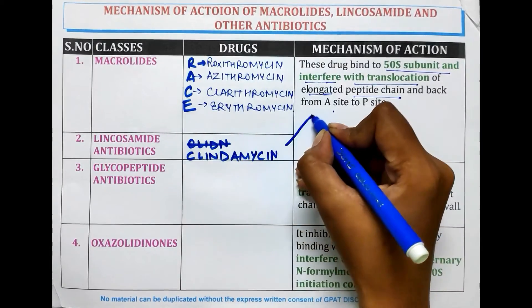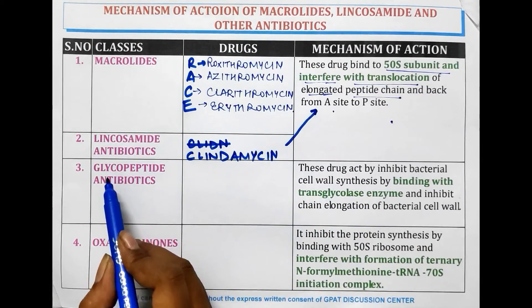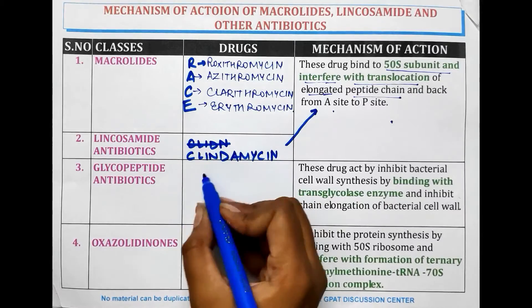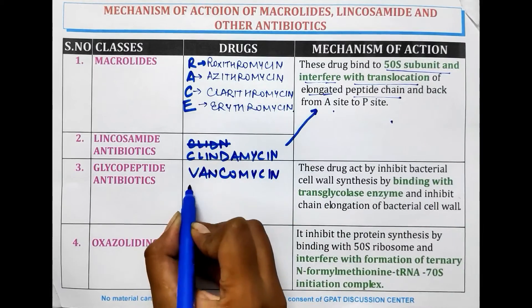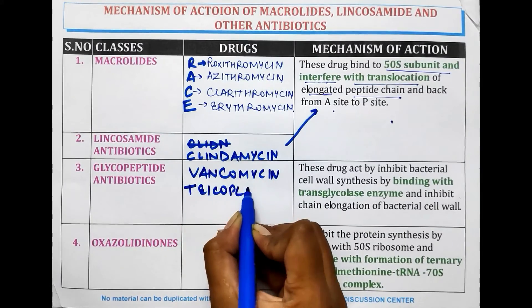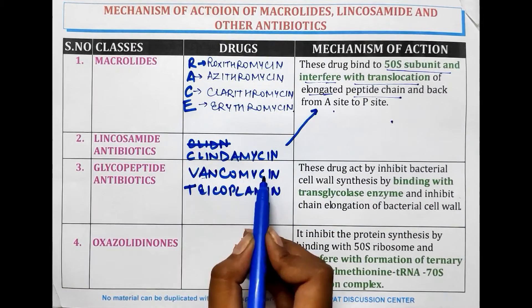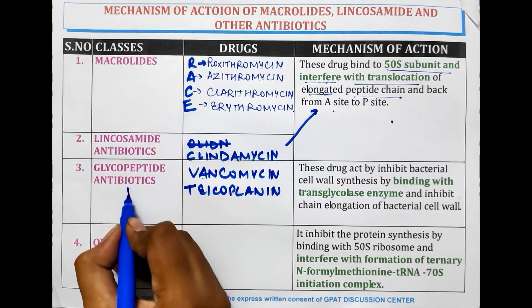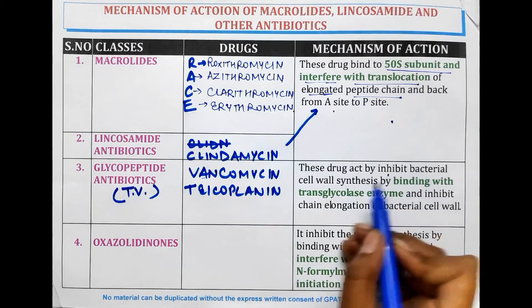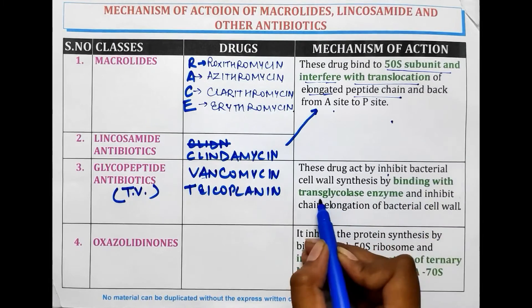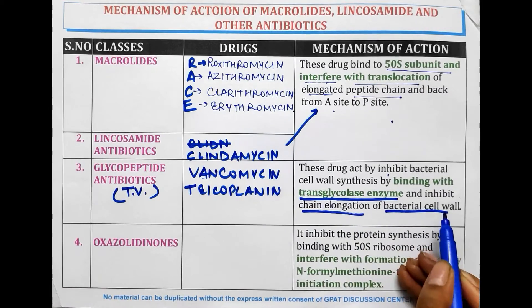The next category is Glycopeptide antibiotics. The two drugs are Vancomycin and Teicoplanin. The mechanism of action of these glycopeptide antibiotics is that they act by inhibiting bacterial cell wall synthesis, binding with the transglycosylase enzyme and inhibiting the chain elongation of the bacterial cell wall.